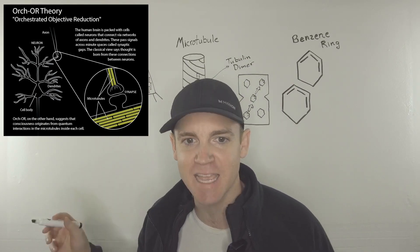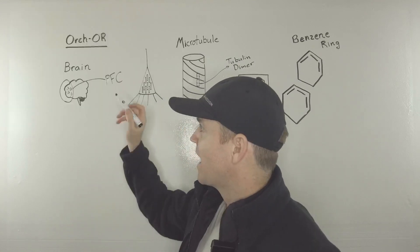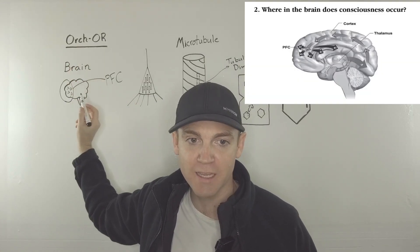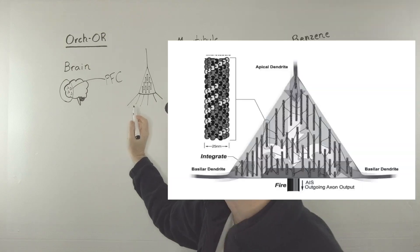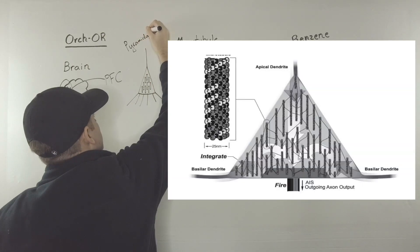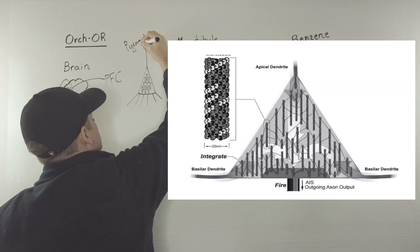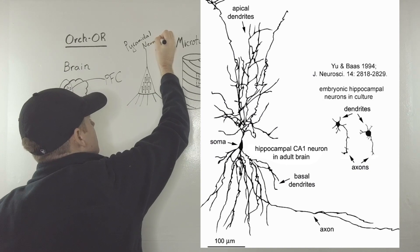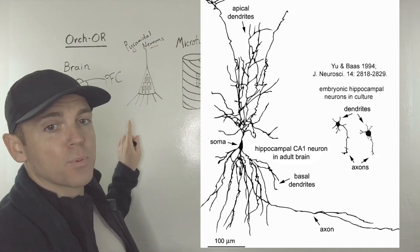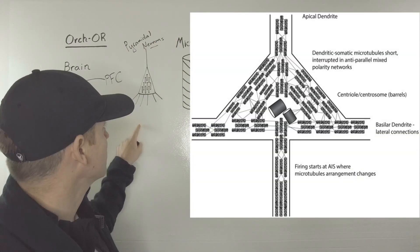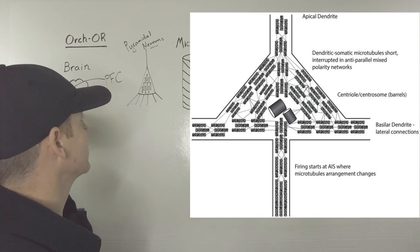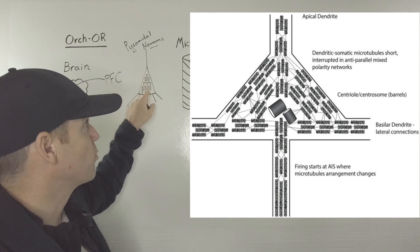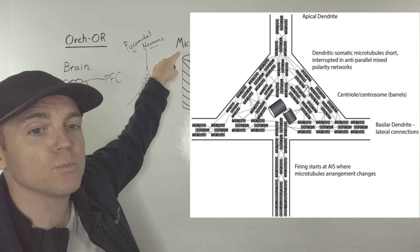The theory basically states that in the brain, in your prefrontal cortex, there are pyramidal neurons. So there are pyramidal neurons inside of your prefrontal cortex, and inside of the prefrontal cortex, in the pyramidal neurons, are microtubules.